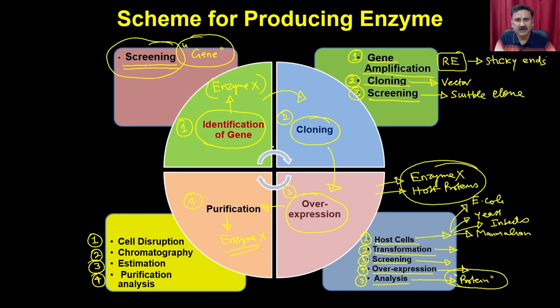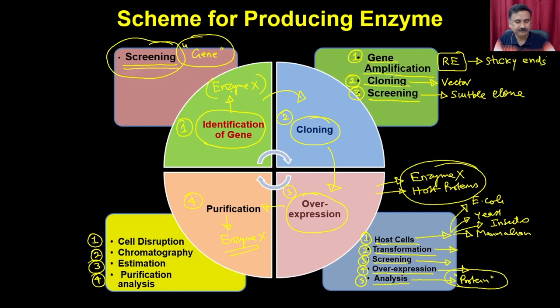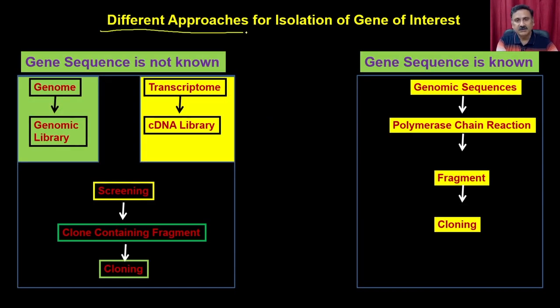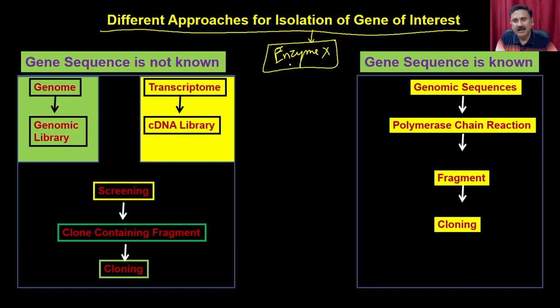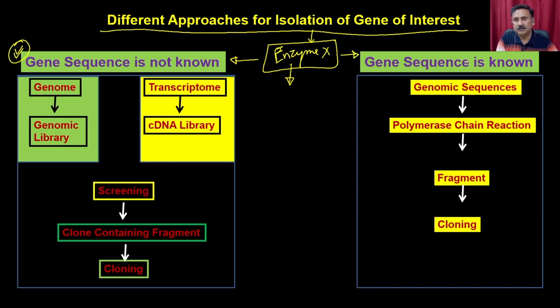Today we will discuss how to identify the gene corresponding to enzyme X. There are different approaches for isolation of the gene of interest. If the gene sequence is not known, you can use two approaches; if the gene sequence is known, you use a different approach. When the gene sequence is not known, you either have a gene fragment known to express part of enzyme X, or you have the messenger RNA or the active enzyme.